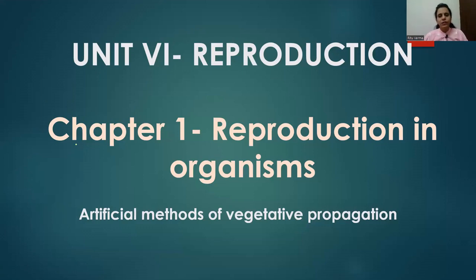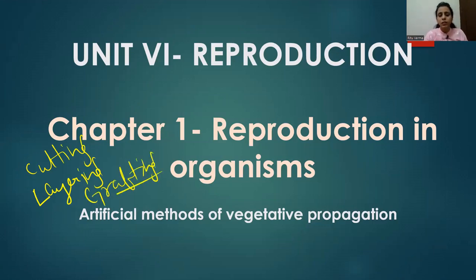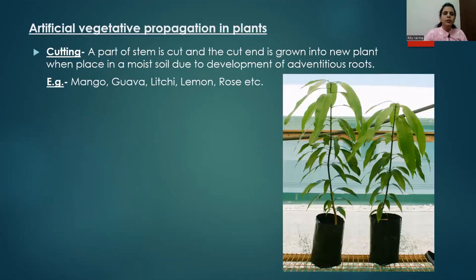In the previous video we discussed about some of the natural methods of vegetative propagation in plants. In this video we are going to discuss about the artificial methods of vegetative propagation in plants. There are three methods: cutting, layering, and grafting. Let's discuss these three methods one by one.